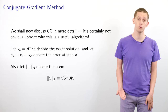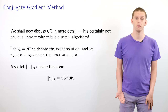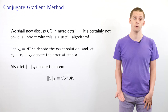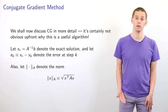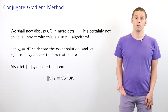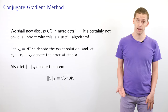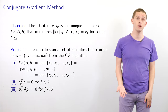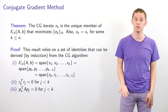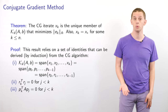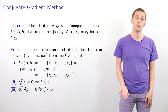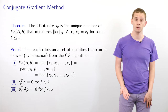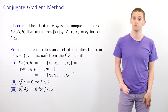We define x* = A⁻¹b as the exact solution to our linear system, and e_k = x* - x_k as the error at each step. We also introduce an A-norm defined for a vector x as the square root of x^T A x. We have a theorem that says the CG iterate x_k is the unique member of the Krylov subspace K_k(A,b) that minimizes e_k with respect to the A-norm, and that x_k = x* for some k ≤ n. The proof relies on a set of identities derived by induction from the CG algorithm.